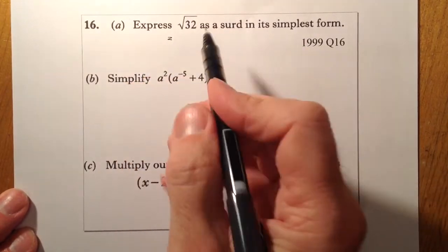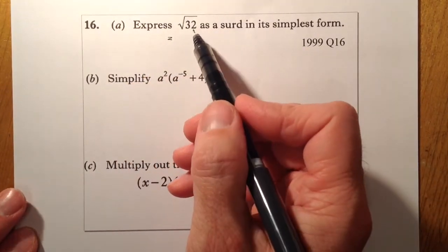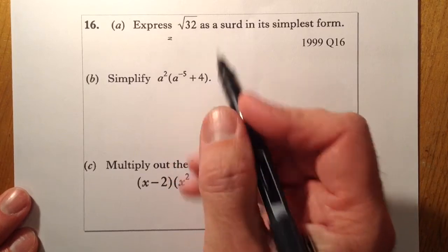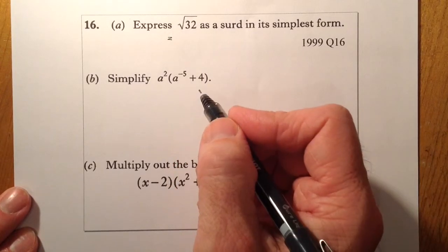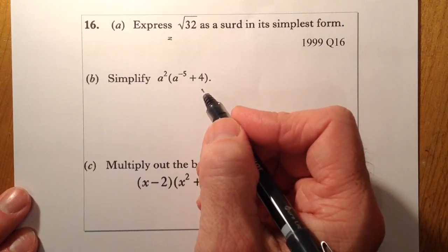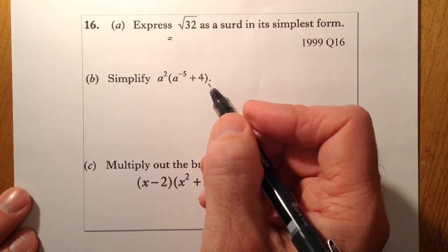Right then, so root 32. I'm looking for a square number and the number that multiply together to get 32. So I've got four and eight, but that won't give me the finished answer.